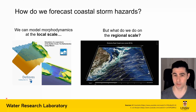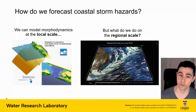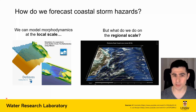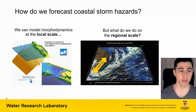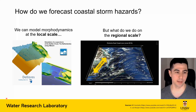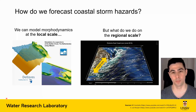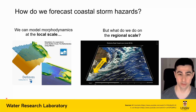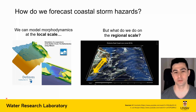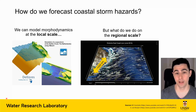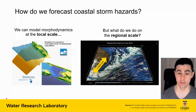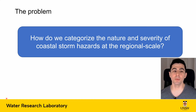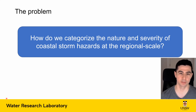This east coast low event affected the entire New South Wales coastline, which is about a thousand kilometers, so we can't really set up an XBeach model at every single beach along the entire coastline. But we still want to be able to understand where we need to be concerned about if we have another event like this. So the problem is: how do we categorize the nature and severity of coastal storm hazards at the regional scale?